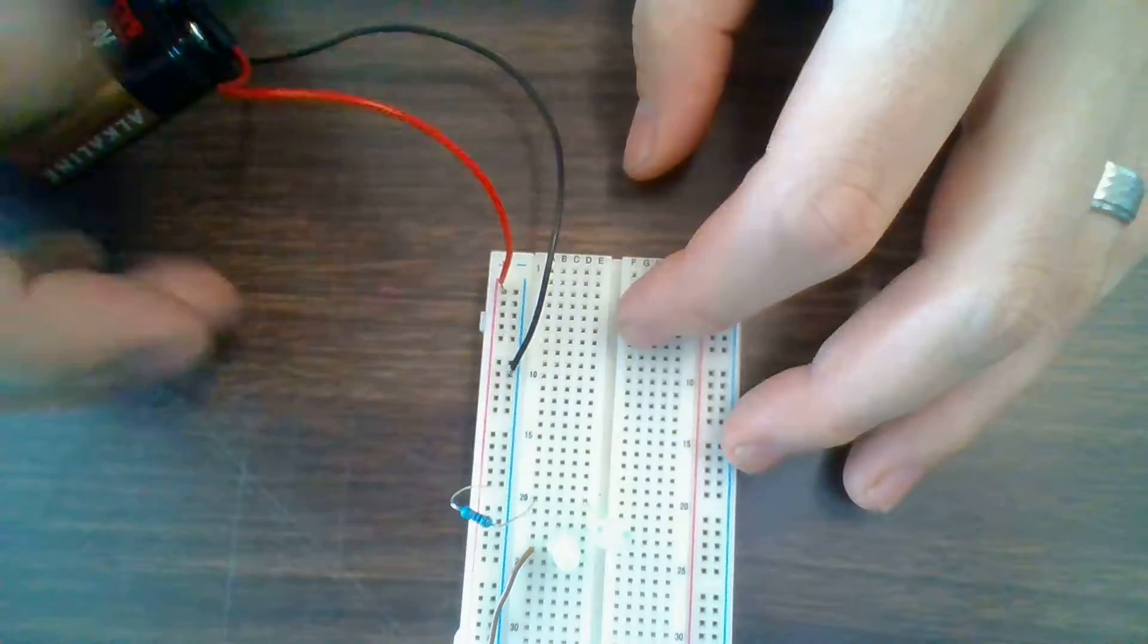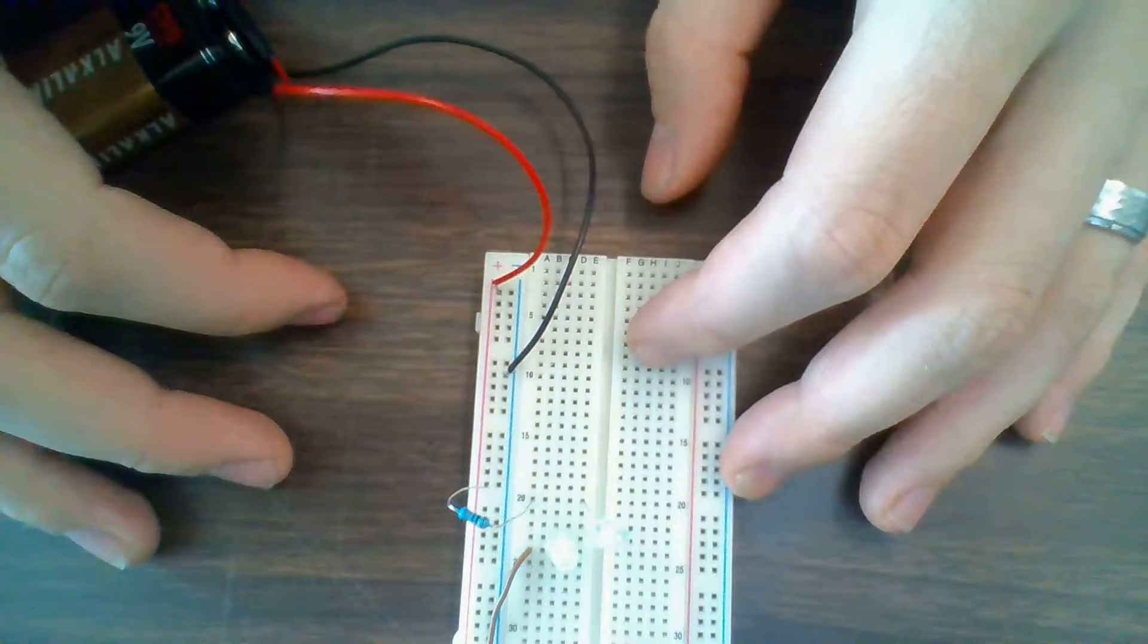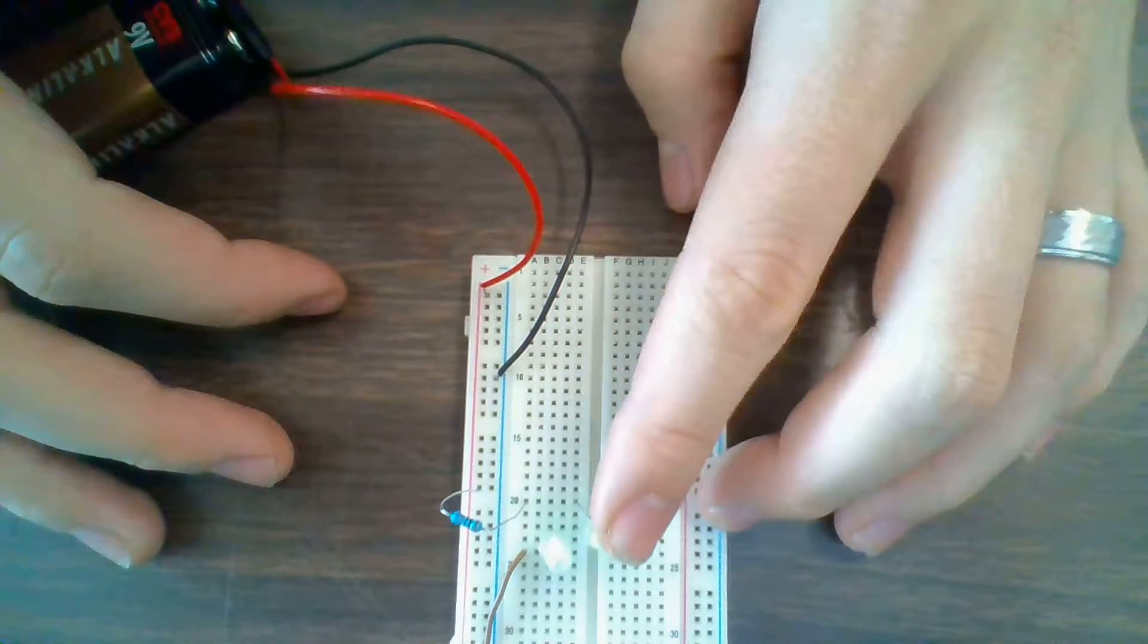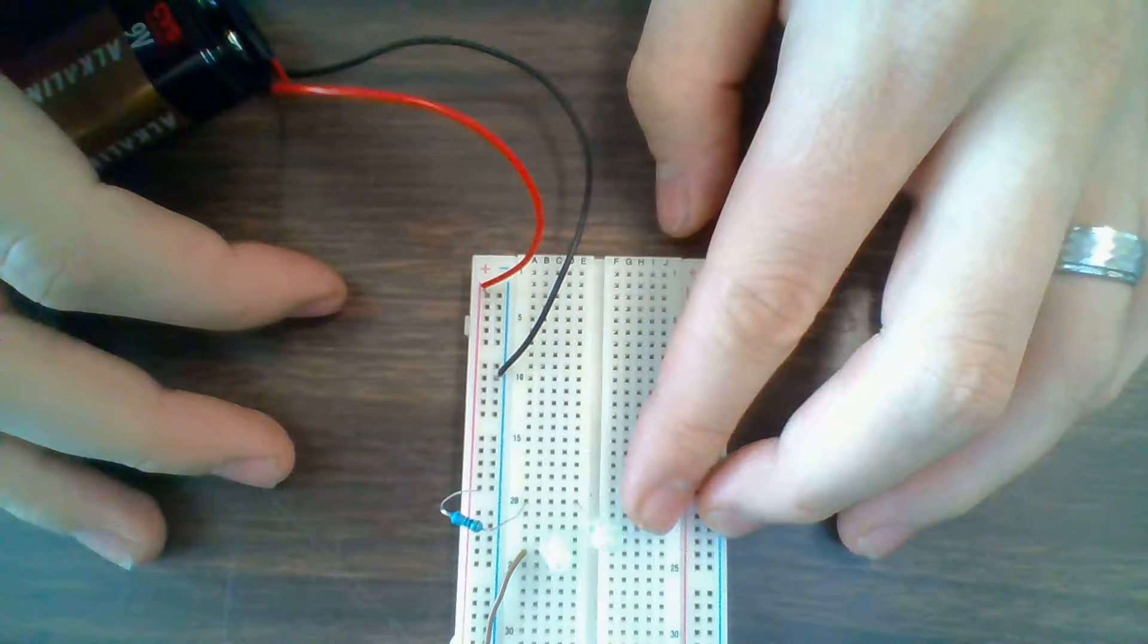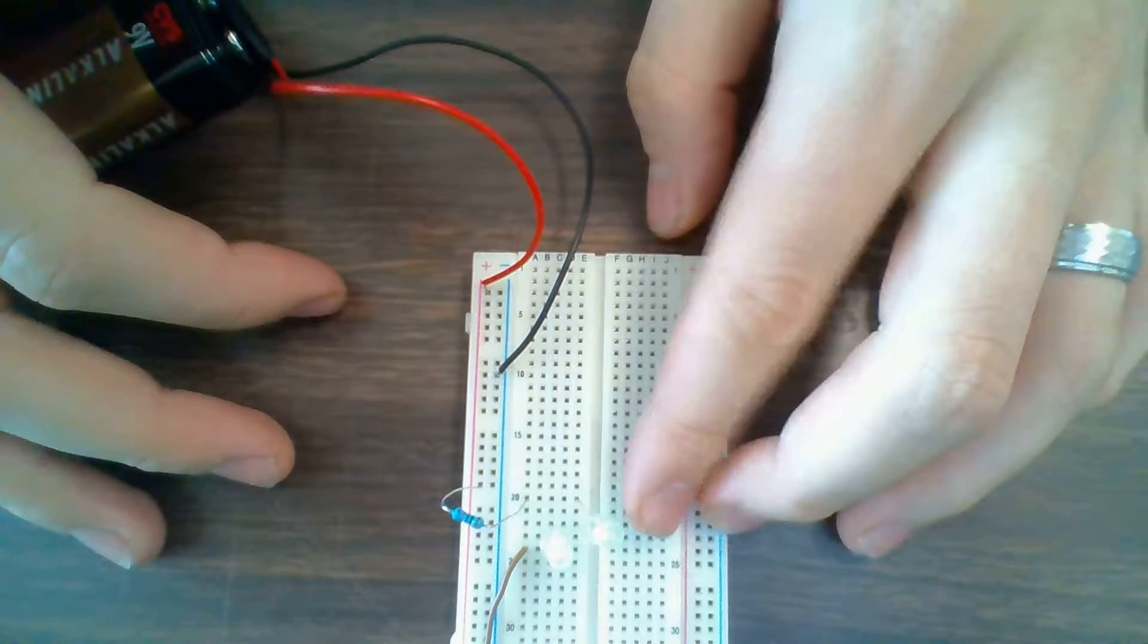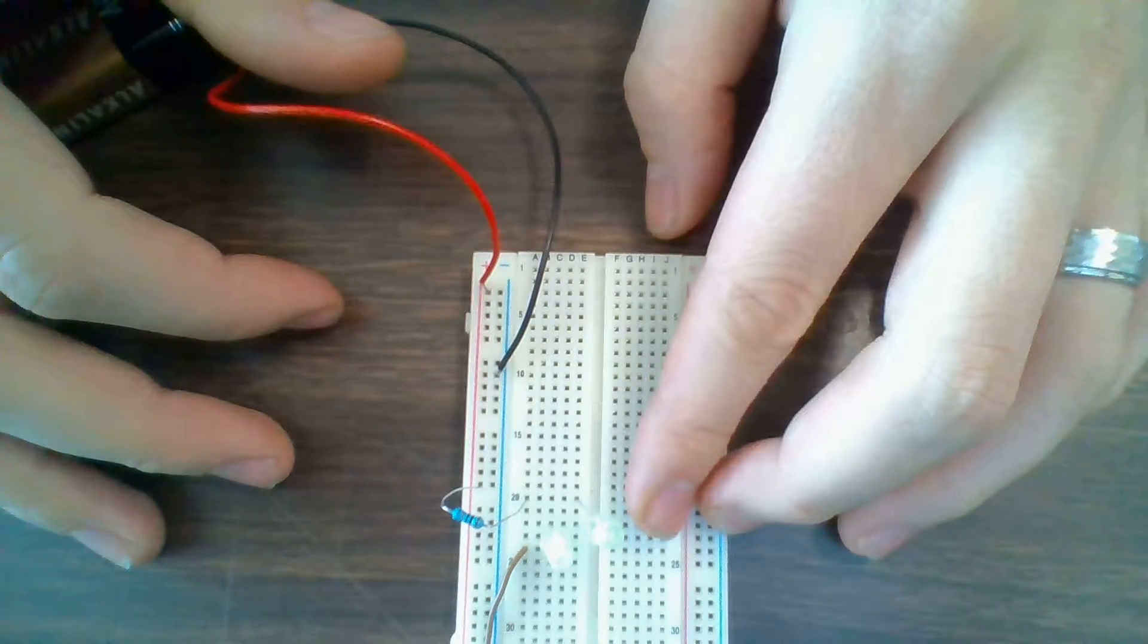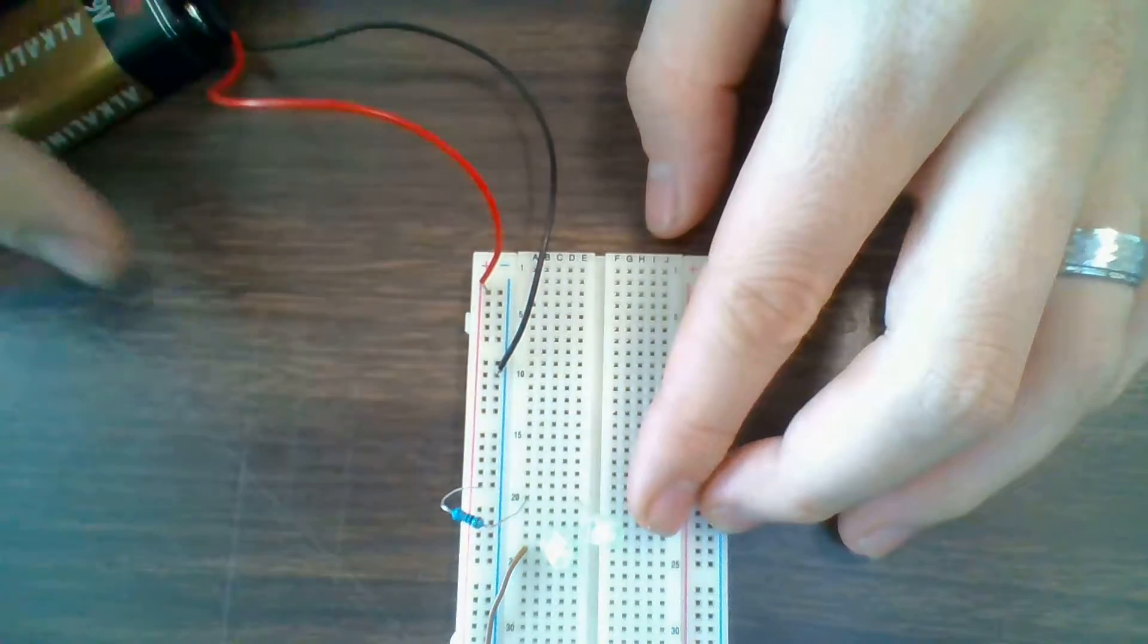Okay, now this illustrates something else important about series circuits. If you have components in series, if you notice both of these LEDs are dimmer than the circuit before where I only had one LED. That's a key thing to remember about series circuits: the more components you have in series, the more you're going to drain how much voltage you have.